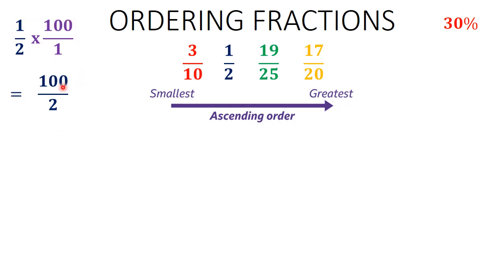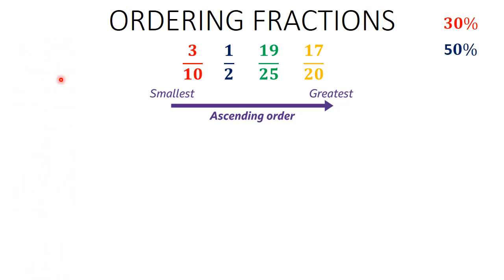Now for 1 over 2: 1 times 100 gives 100, and 2 times 1 gives 2. How many times does 2 go into 100? First, how many 2s in 10? That gives 5. Then bring down the zero — 2 goes into 0 zero times, so you write 0 after the 5, giving 50. So 1 over 2 equals 50%.